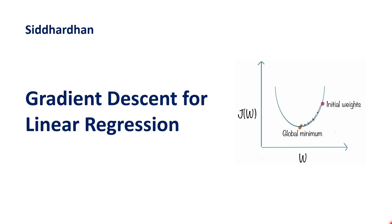Gradient descent is one of the most important concepts in machine learning and deep learning. It is a very important model optimization technique that we use in order to find the best parameters for our model. In today's video let's understand what is meant by model optimization, how we can use the gradient descent algorithm to optimize our model, and how we can implement gradient descent for linear regression. This is the agenda for today's video.